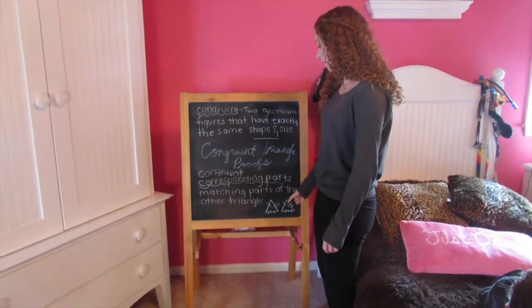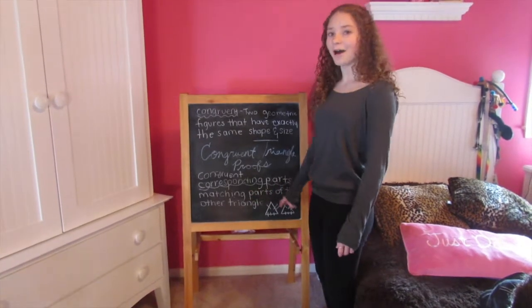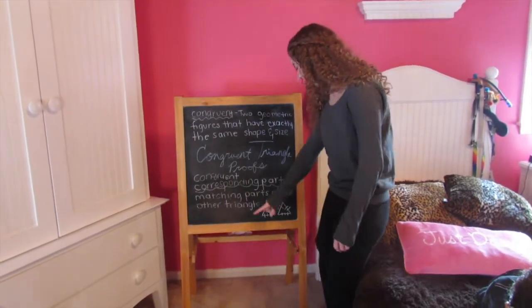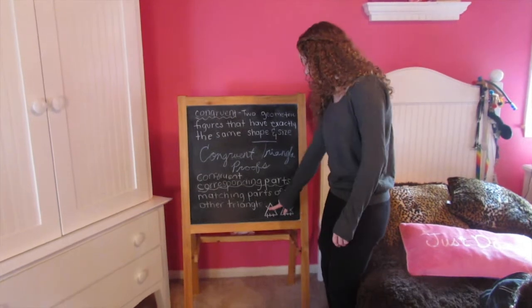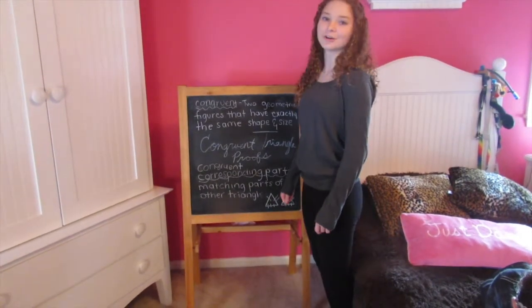Congruent corresponding parts are matching parts of the other triangle. So that means that the dash here on each triangle are congruent, two dashes are congruent, and three dashes are congruent.